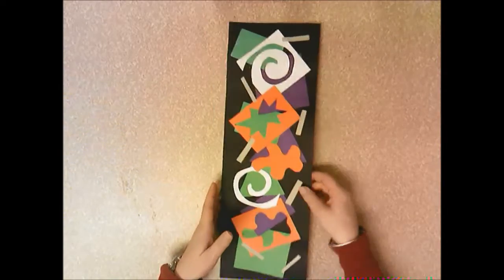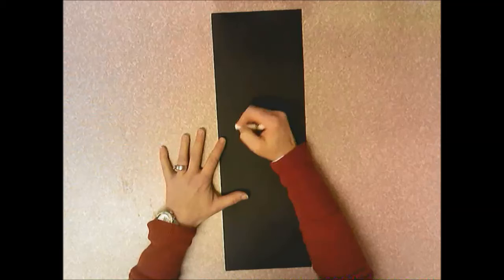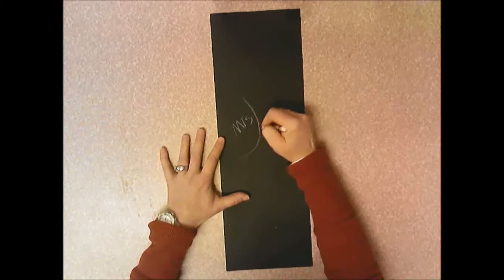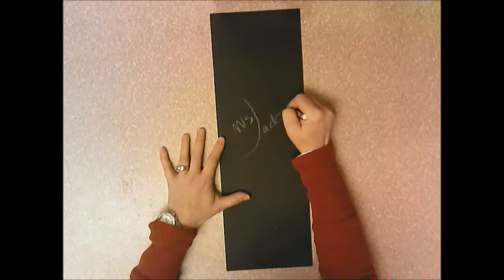We start with our geometric shapes. So the first thing you're going to do is get a black piece of paper and with a white crayon you need to write your name and the day you have art, day A, day B, day C.